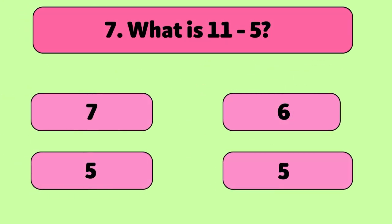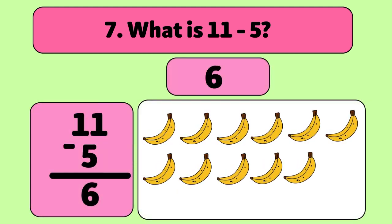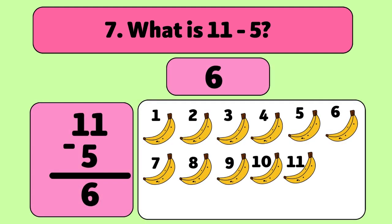What is 11 minus five? The answer is six. We start with 11 bananas and take away five. Let's count. One, two, three, four, five. We have six bananas now.